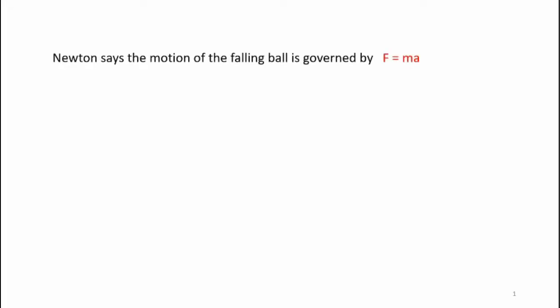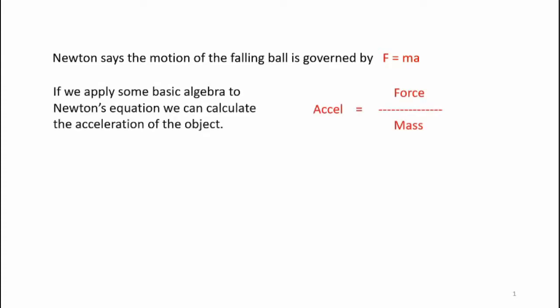Newton says the motion of the ball is governed by his equation F equals MA, where F is the force acting on the ball, M is the mass of the ball, and A is the acceleration the ball is being subjected to. If we apply some basic algebra to this equation, we can calculate the actual acceleration of the ball — acceleration is equal to force divided by mass.